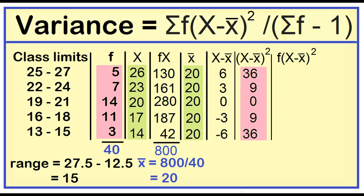Multiply the squared deviation to the frequency. 5 times 36 is 180. 7 times 9 is 63. 14 times 0 is 0. 11 times 9 is 99. 3 times 36 is 108.